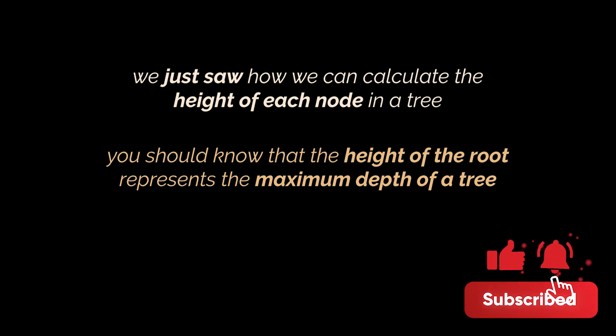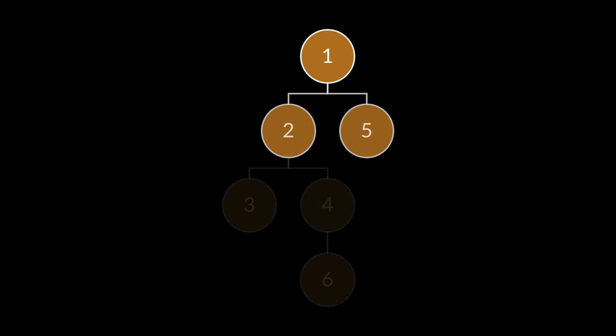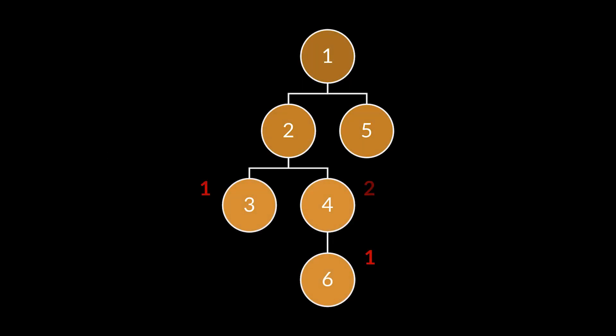Sometimes they might ask you to retrieve the minimum depth of a given binary tree, and that is the problem we will attempt to solve next. You see, in this example, the minimum depth of that tree is two because the shortest path from the root down to the nearest leaf node contains two nodes only, root node included.